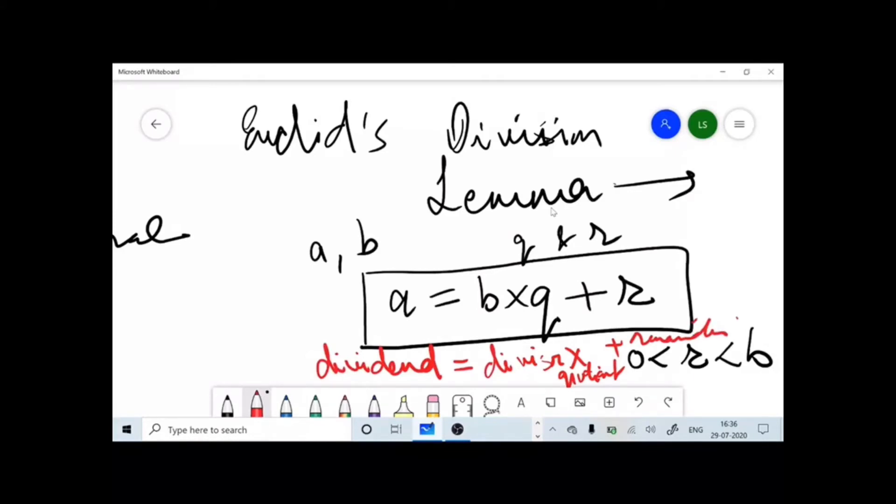If you observe this very carefully, have you ever seen this kind of formula? We are using the same formula from many, many years. It's just the difference of writing. We are giving it a new name in class 10, but this is essentially equivalent to dividend equals divisor into quotient plus remainder. That's what we are trying to say. This is dividend, this is your divisor, this is your quotient, and this is your remainder.